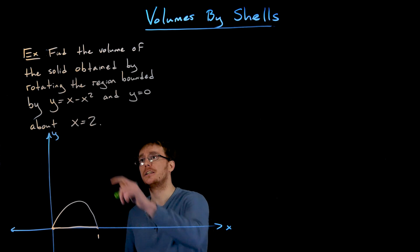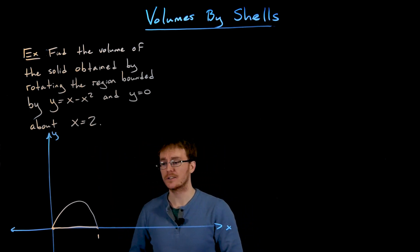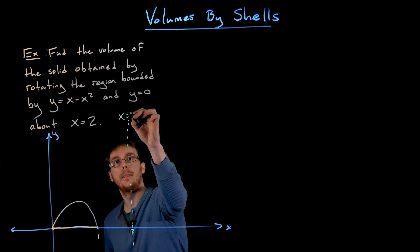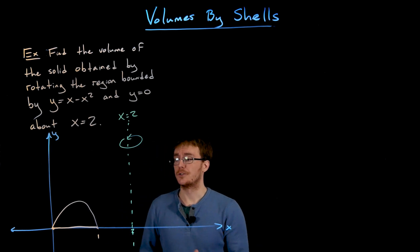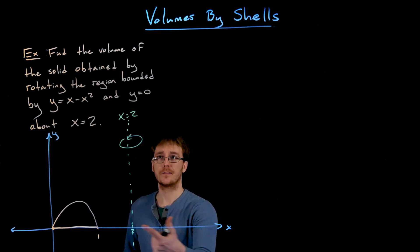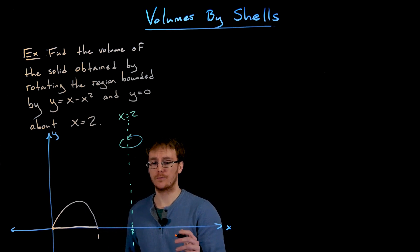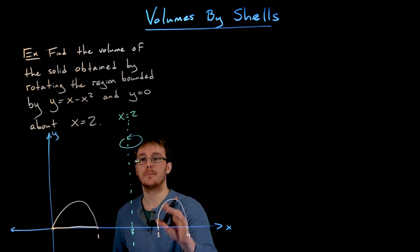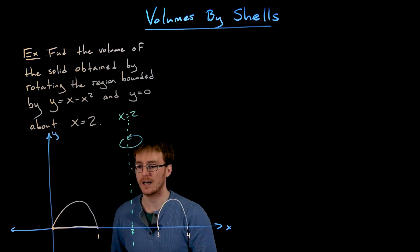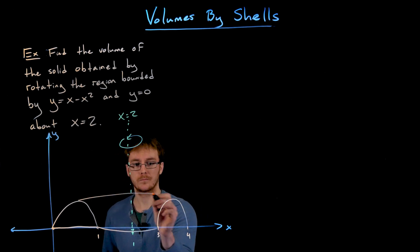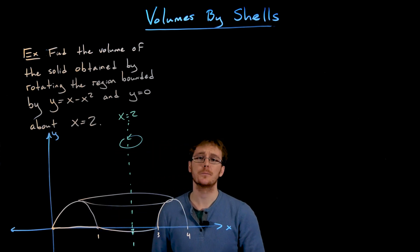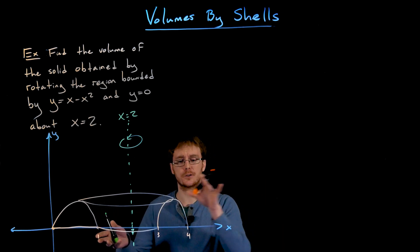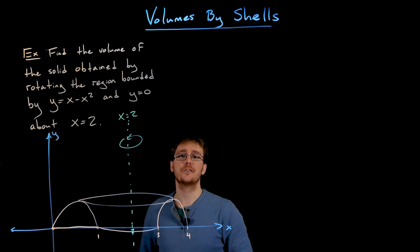Our axis of rotation is the line x equals two. Remember, if x equals a constant that gives us a vertical line. We rotate our parabolic region around this line x equals two to create our solid of revolution — a somewhat symmetric bump. It's a pretty unusual-looking solid, basically like a ring with a flat bottom and a curved parabolic top.